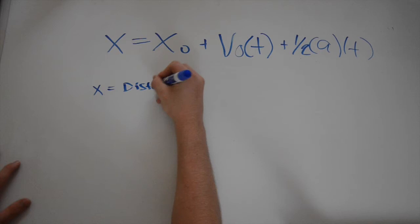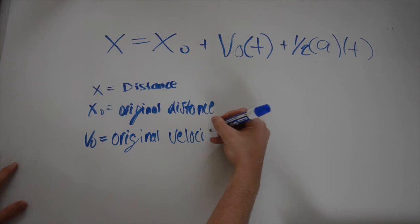The second formula is for distance: X equals X₀ plus V₀ times T plus one-half A times T squared. X equals distance, X₀ equals the original distance, V₀ equals the original velocity, T equals time, and A equals acceleration.